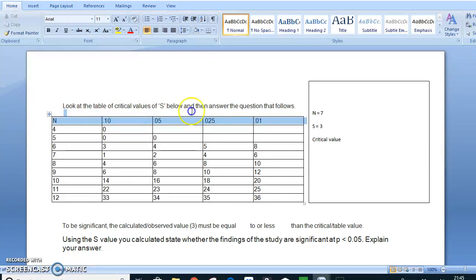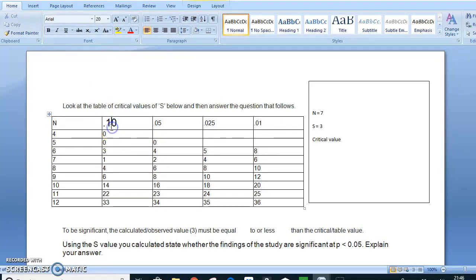So the calculated value that we worked out was 3 must be equal to or less than something. Now, I'm going to go back to this in a minute because it says here, and this is an important point, this is the actual question. So using the S value you calculated, state whether the findings of the study are significant at P equals to 0.05 or less. So on this particular one, now notice this time is slightly different from the other one that you saw earlier. Now, if you look carefully, there is a point there. They've done a cheeky thing here, which is they've put this dot here.